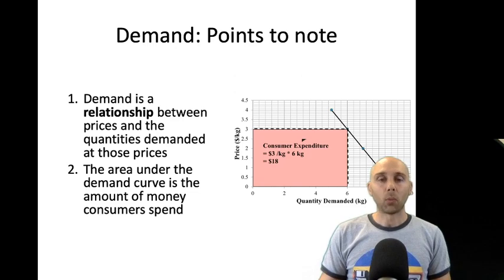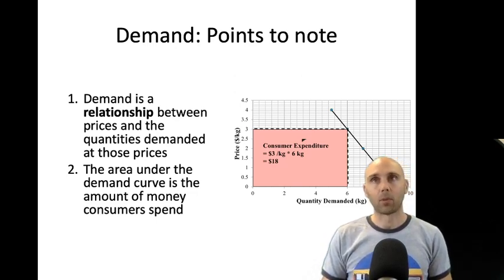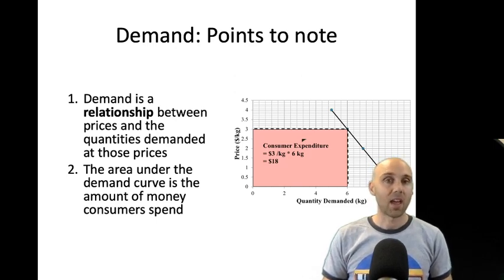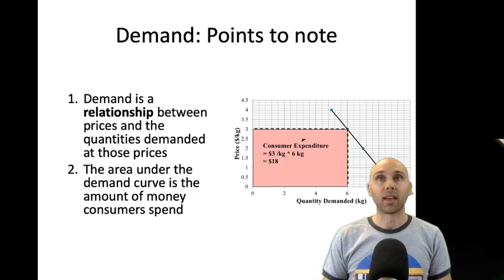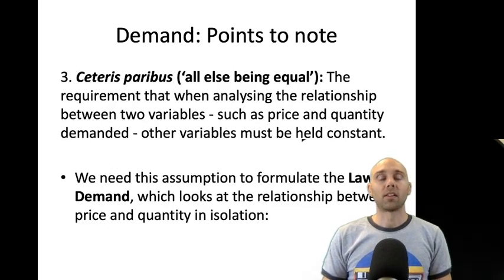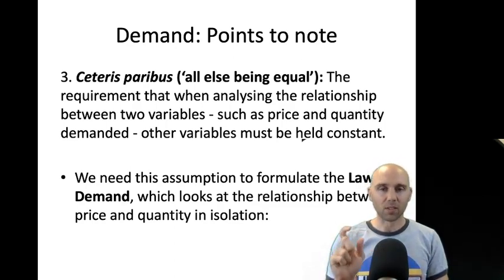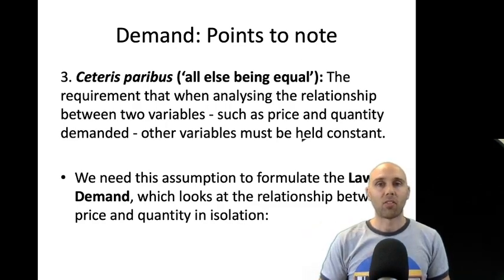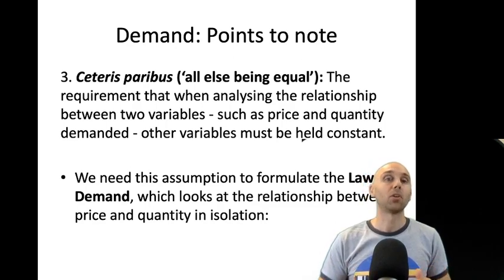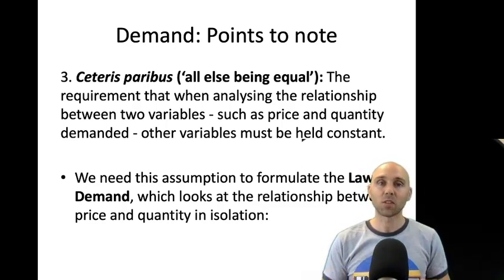If we draw a rectangle from a point on the demand curve to the origin, that rectangle will represent consumer expenditure at that point. For example, at a price of $3 per kilogram, the quantity demanded is 6 kilograms, so people have spent $3 times 6 — that's $18. The relationship between price and quantity are the only two things being considered along that line — just as a line Y equals X plus 2 shows only the relationship between X and Y. All points on a demand curve represent how quantity changes when price changes, but nothing else. That's what Ceteris Paribus means — we hold everything else constant.